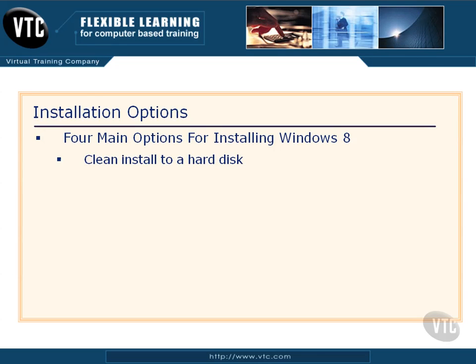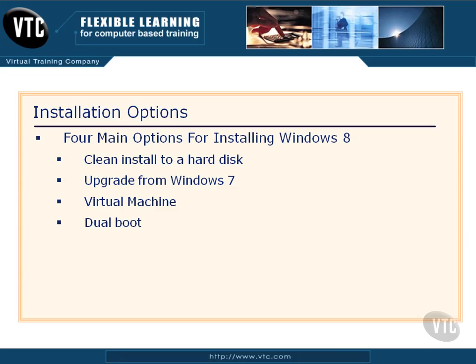First is a clean install to a hard disk — this is the standard, where we put the Windows 8 installation media in, tell it to do a clean install, and point it to our partition. Then there's upgrade from Windows 7. We can also use virtual machines to run Windows 8, and the last of the four options is a dual boot.